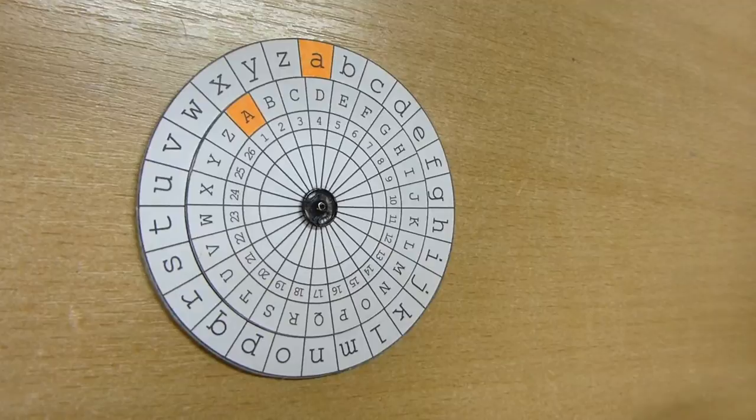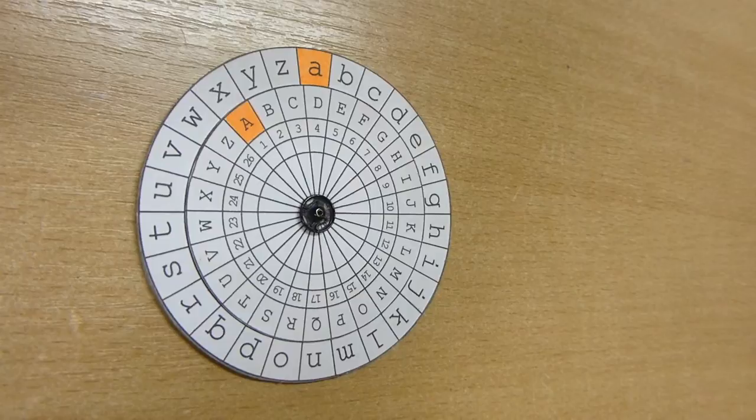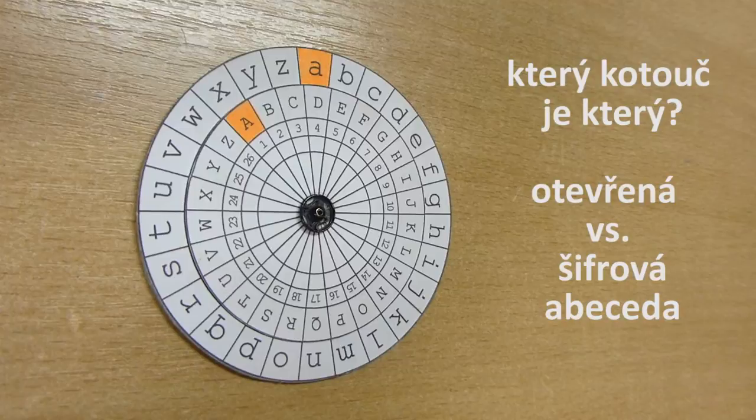Všimněte si, že když na jednom kotouči mám A, na druhém je u něho D. Když si však najdu znak A na druhém kotouči, na prvním u něj vidím X. Jak poznat, který kotouč obsahuje normální neboli otevřenou abecedu a který má na sobě napsanou abecedu zašifrovaného textu, tedy šifrovou?